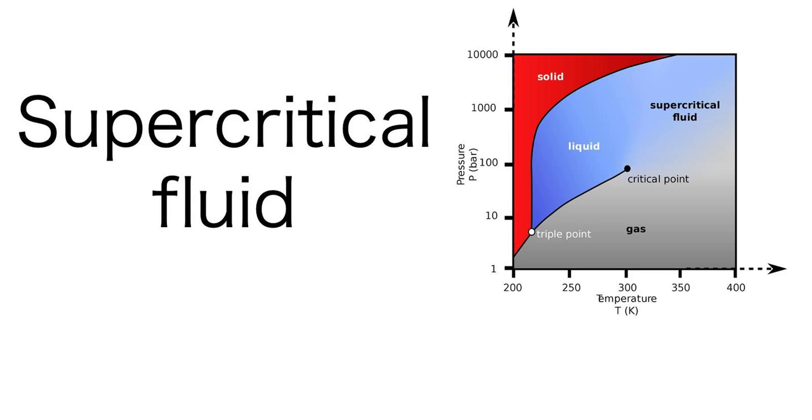This is usually done using methanol and caustic or acid catalysts, but can be achieved using supercritical methanol without a catalyst. The method of using supercritical methanol for biodiesel production was first studied by Saka and his co-workers.